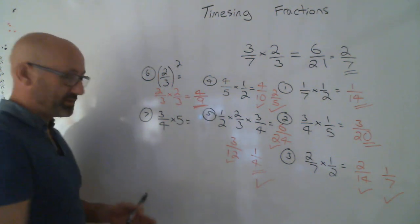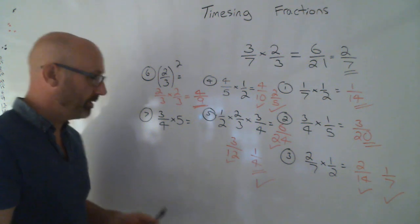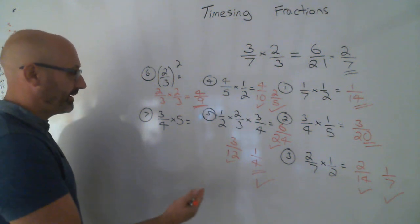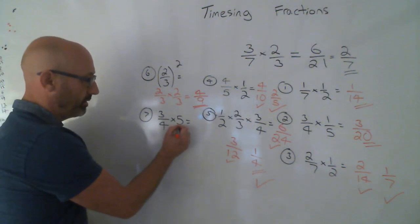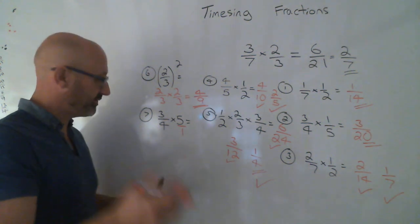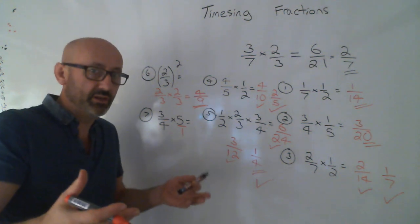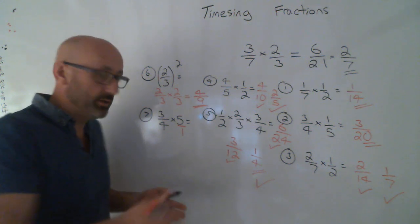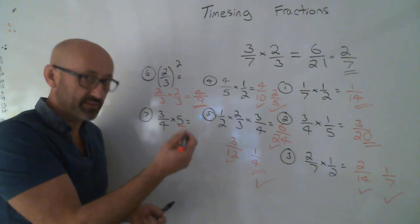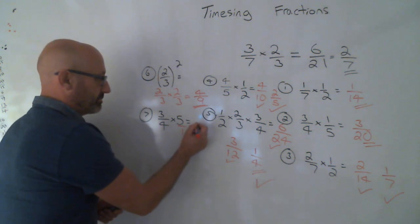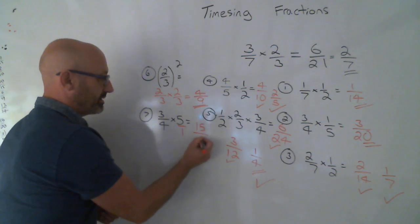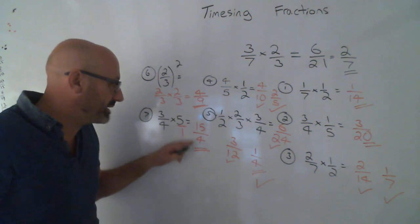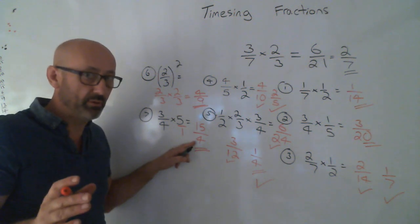The last question. Have you any idea what to do there? Well, whenever you've got any whole number, 5, you can always put a 1 underneath it. Because 5 pounds divided by 1 person, well, you'd get 5 pounds, wouldn't you? So 5 over 1 is the same as 5. Then we just times the tops and you times the bottoms. Don't worry about the fact that the number on the top is bigger than the number on the bottom. That is not a problem at all.